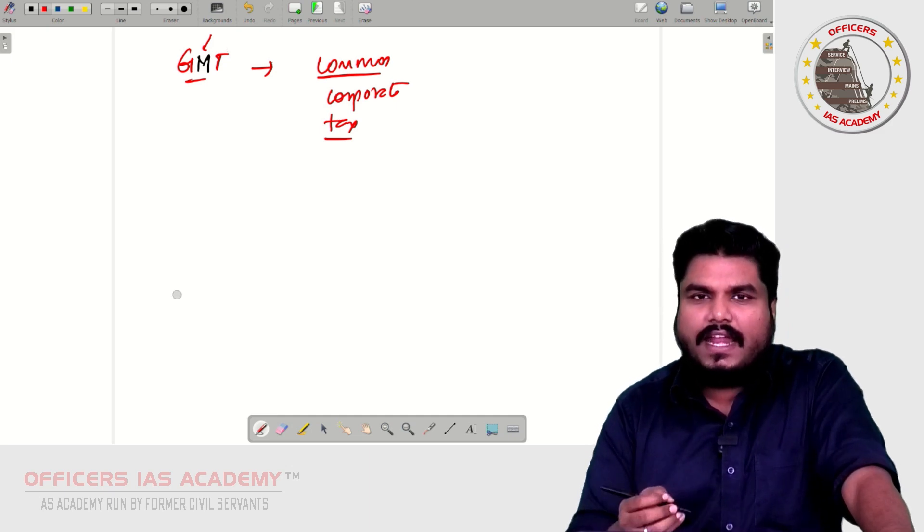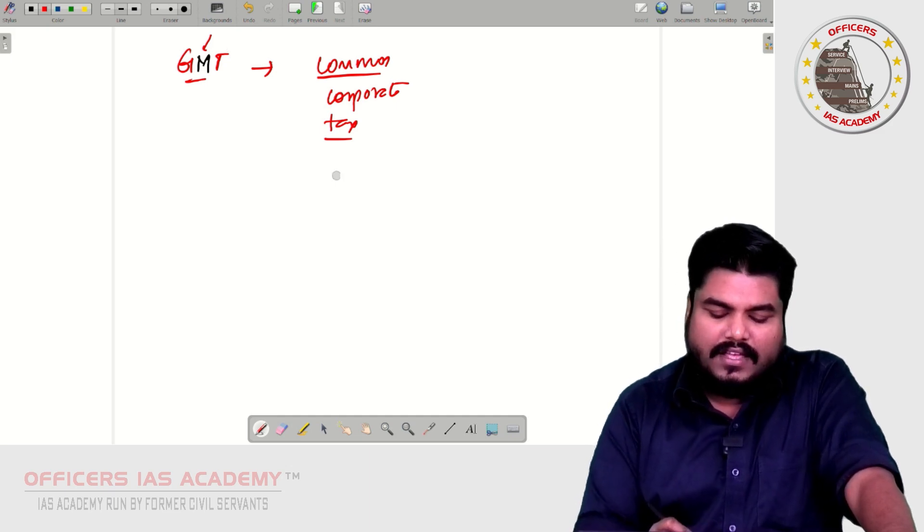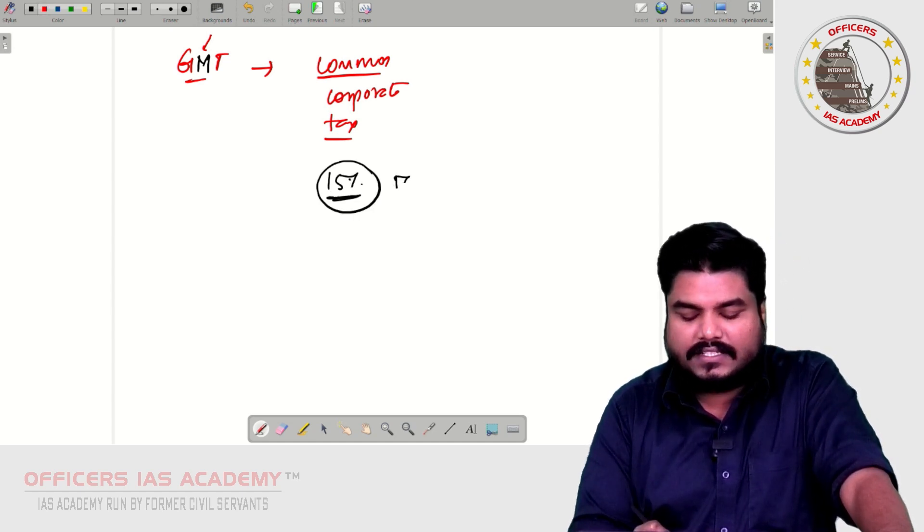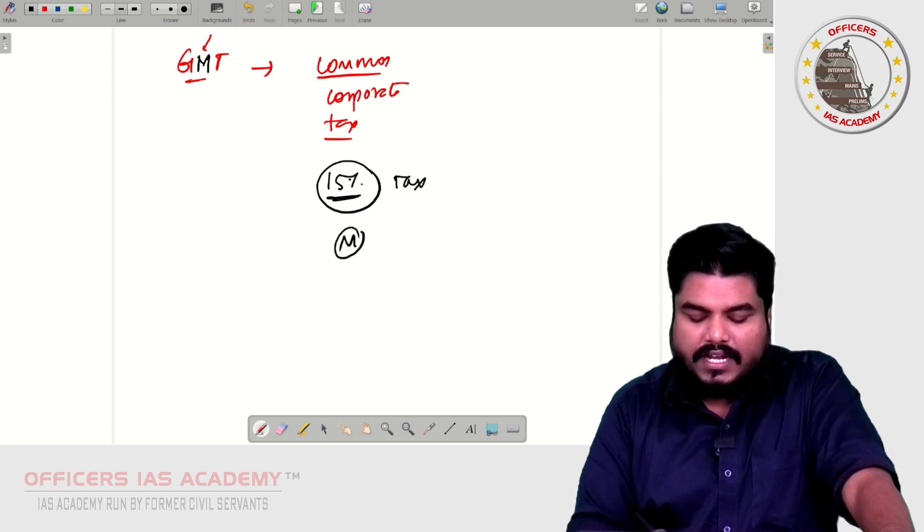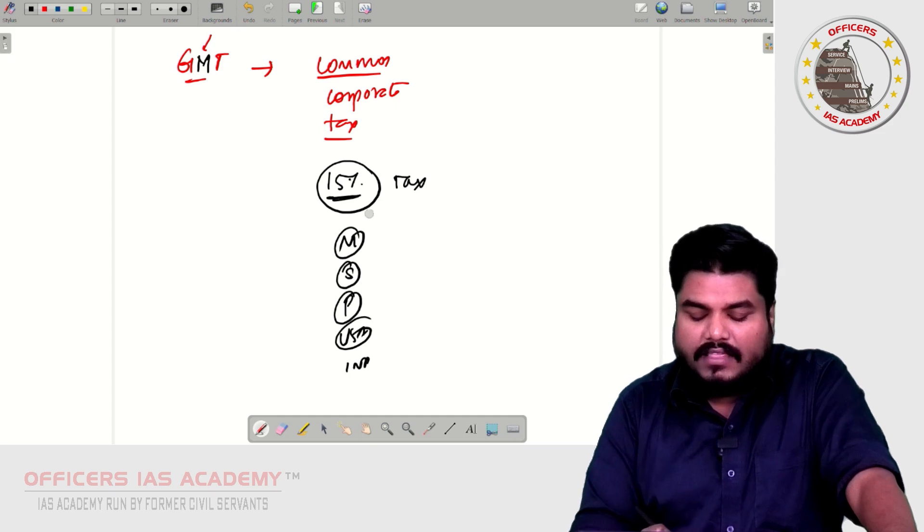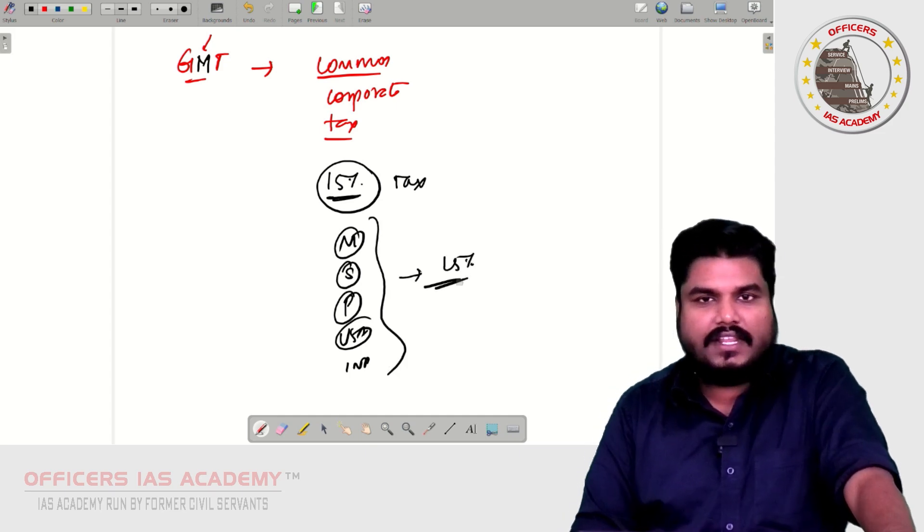So the idea of Global Minimum Tax is to have a common corporate tax structure around the world. But here we are talking about minimum. So the idea is, let's say 15%, the minimum, there should be 15% tax. Be it Mauritius, be it Singapore, be it Panama, be it USA, be it India, the minimum tax should be 15%. This was the idea.